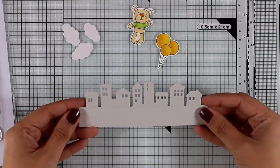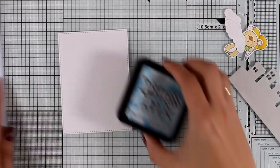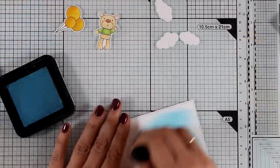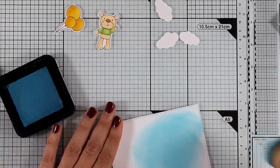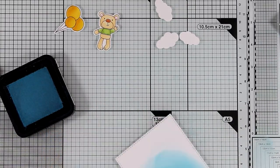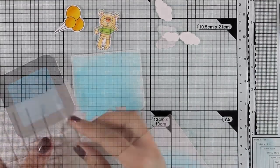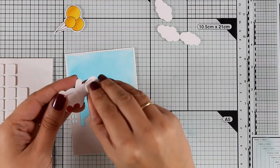So I have cut out some clouds and I used the 'meant to be' dies and I have also cut out these balloons that come from another release that's called 'happy hippos'. The idea here is to have this bear flying while holding the balloons so I'm going to create a sky here. I'm just applying some distress ink with my blending tool and that's tumbled glass. I'm going to add some foam squares at the back of my bear and give him the balloons to hold as if he is flying far up in the sky.